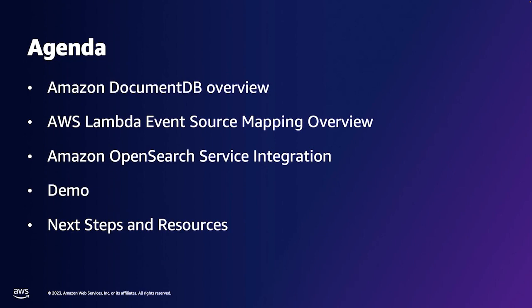So let's go over the agenda. Today we're going to give you a brief overview of Amazon DocumentDB and then talk about the AWS Lambda event source mapping for Amazon DocumentDB. Then Karthik is going to discuss the OpenSearch service integration, which would be an example of event-driven applications built on Amazon DocumentDB. We'll also give you a demo on that, and we'll conclude with resources on next steps, where you can read more, and where you can find out about our future releases.